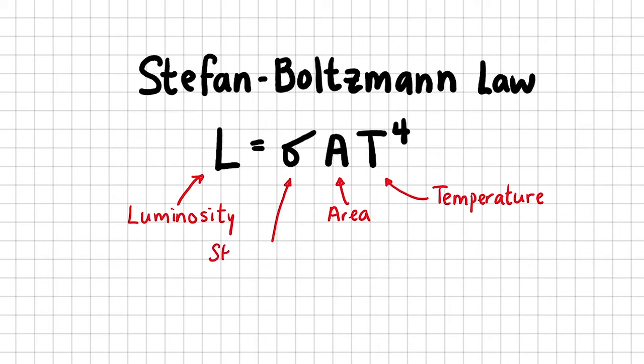And the constant of proportionality is known as the Stefan-Boltzmann Constant, which is 5.67 times 10 to the power of minus 8 watts per meter squared per Kelvin to the power of 4. We use the symbol sigma for Stefan-Boltzmann Constant. Temperature here is the star's surface temperature, and it's measured in degrees Kelvin.